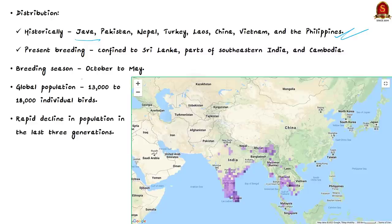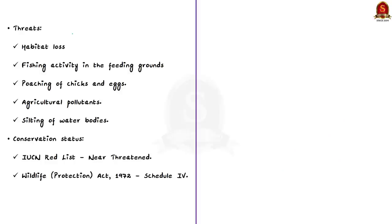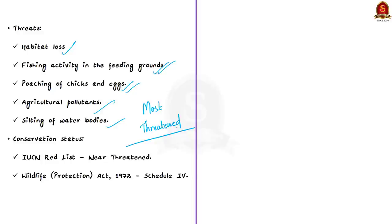As of now, breeding is confined to Sri Lanka, some parts of southeastern India, and Cambodia. The breeding season varies between October to May; in South India it coincides with the northeast monsoon. The global population is believed to be only 13,000 to 18,000 individual birds, with rapid decline over the last three generations. Threats include habitat loss, fishing activity in feeding grounds, poaching of chicks and eggs, agricultural pollutants, and silting up of water bodies.